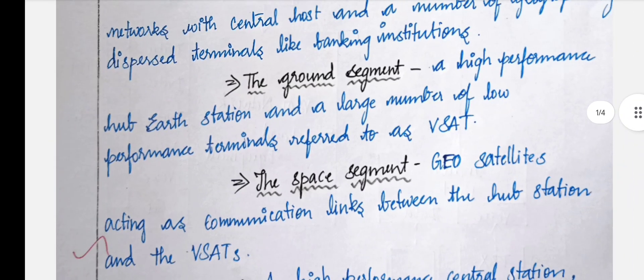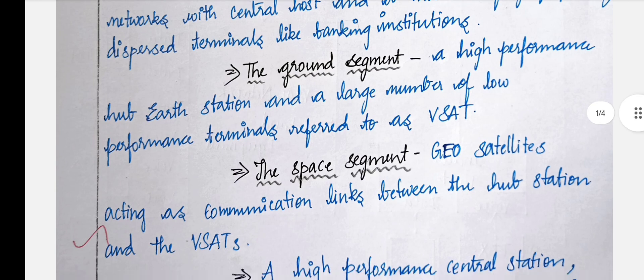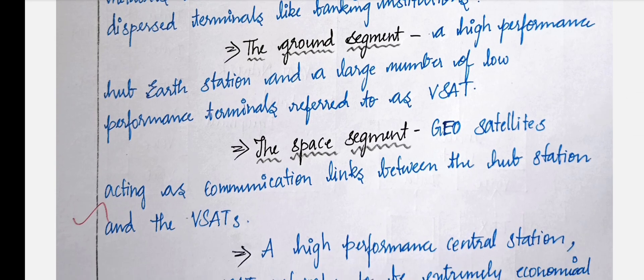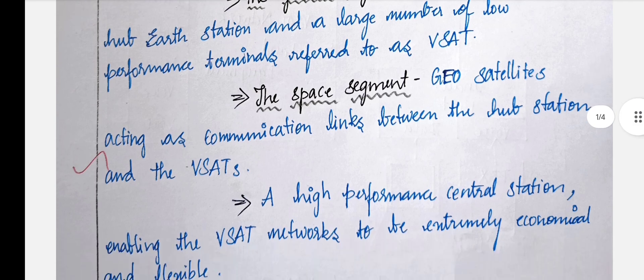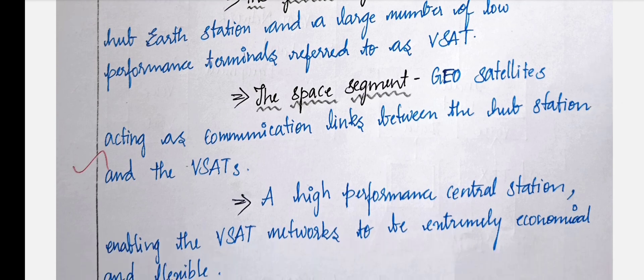It has a ground segment and a space segment. A ground segment is a very high-performance hub earth station and a large number of low-performance terminal VSATs, and a space segment which is a geostationary satellite acting as a communication link between the hub station and the VSAT.